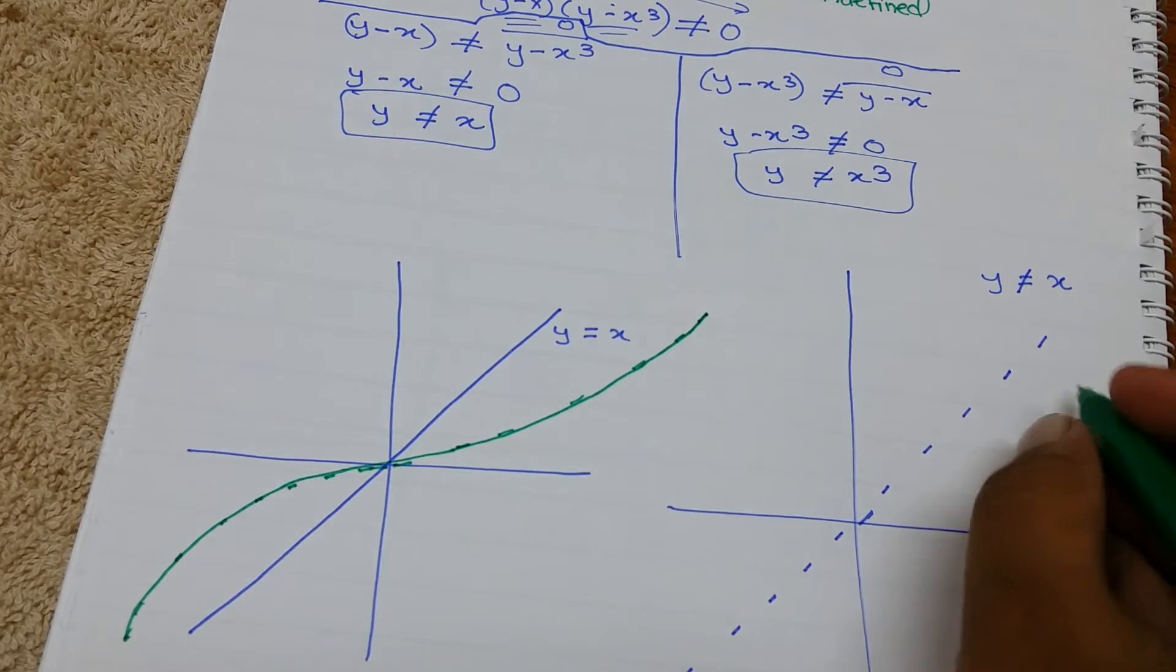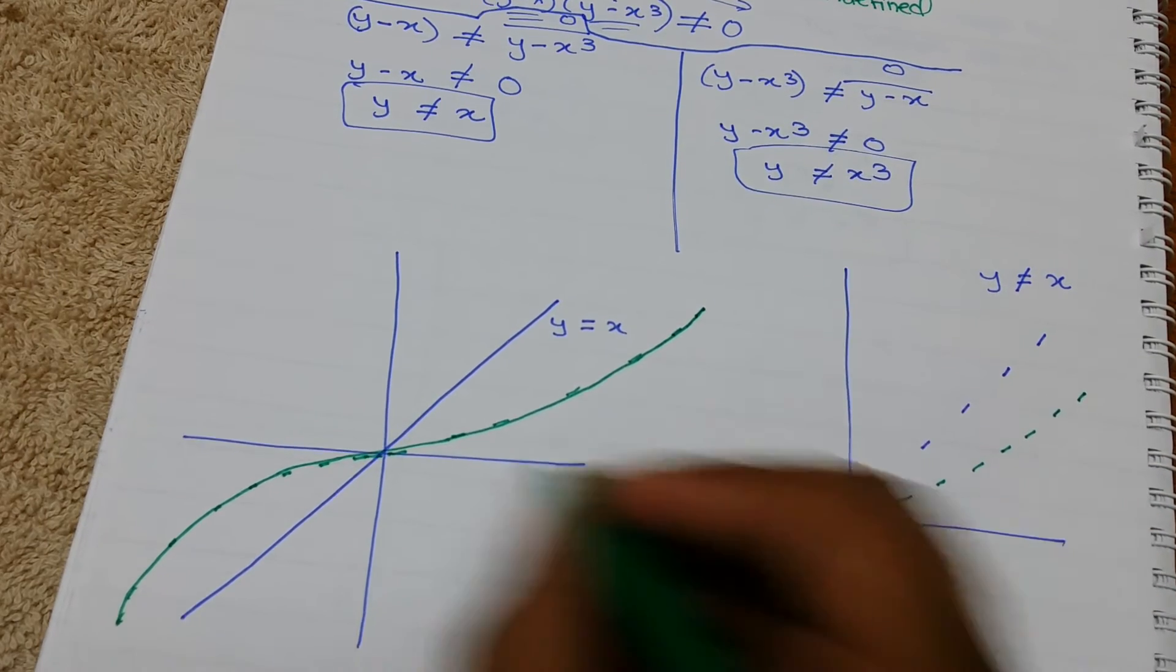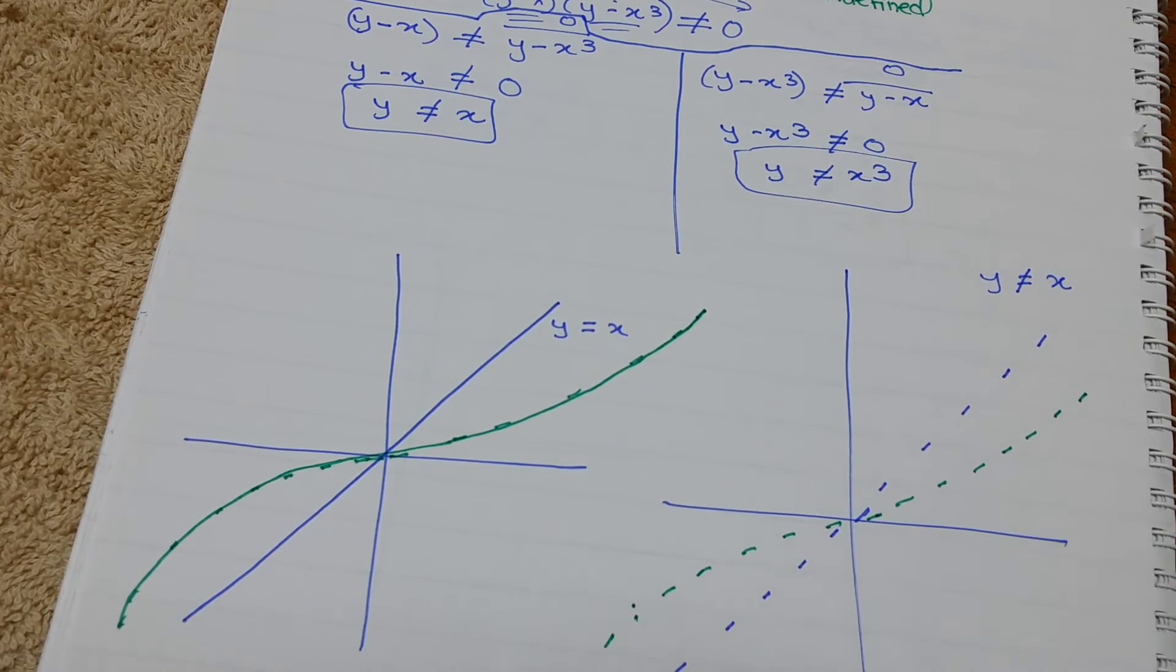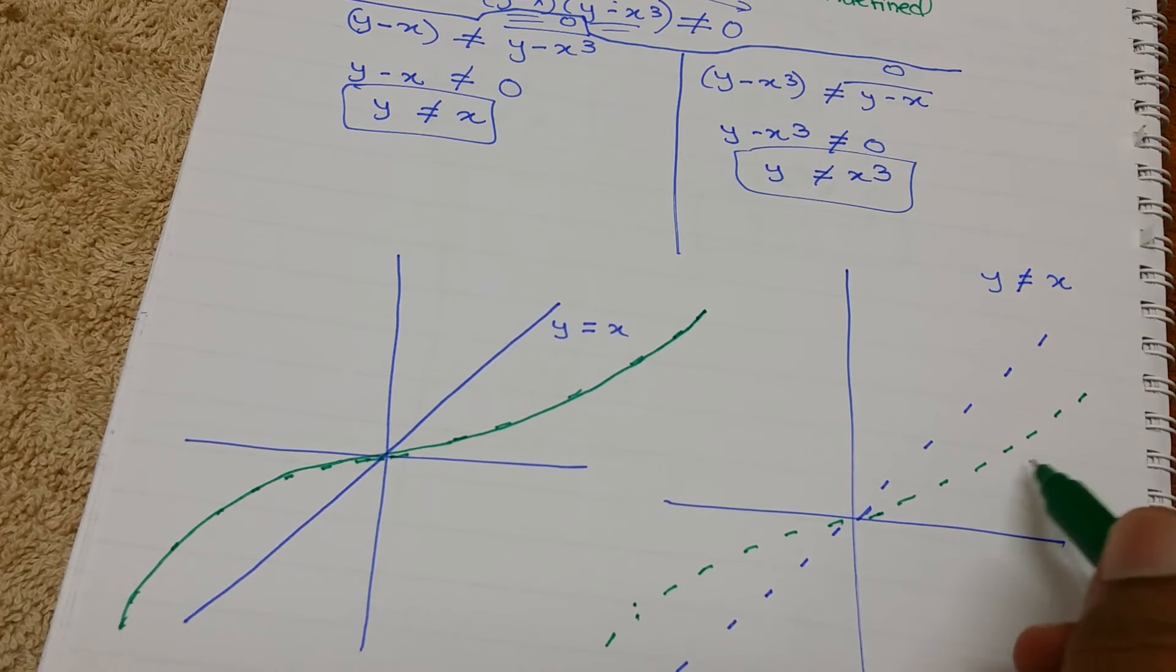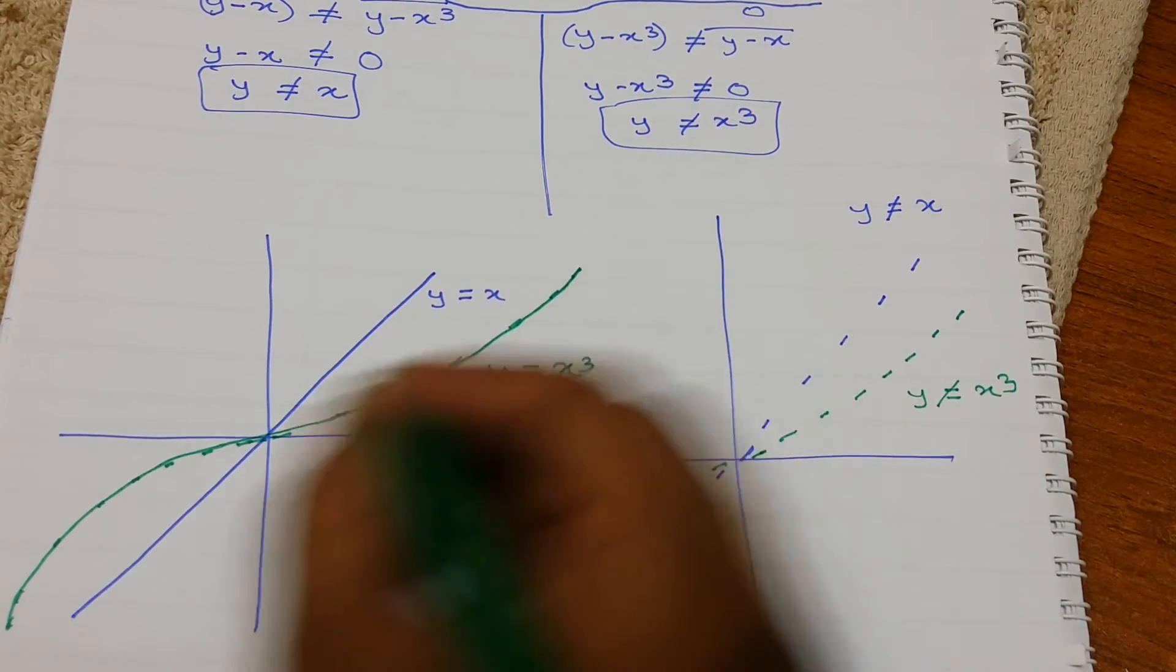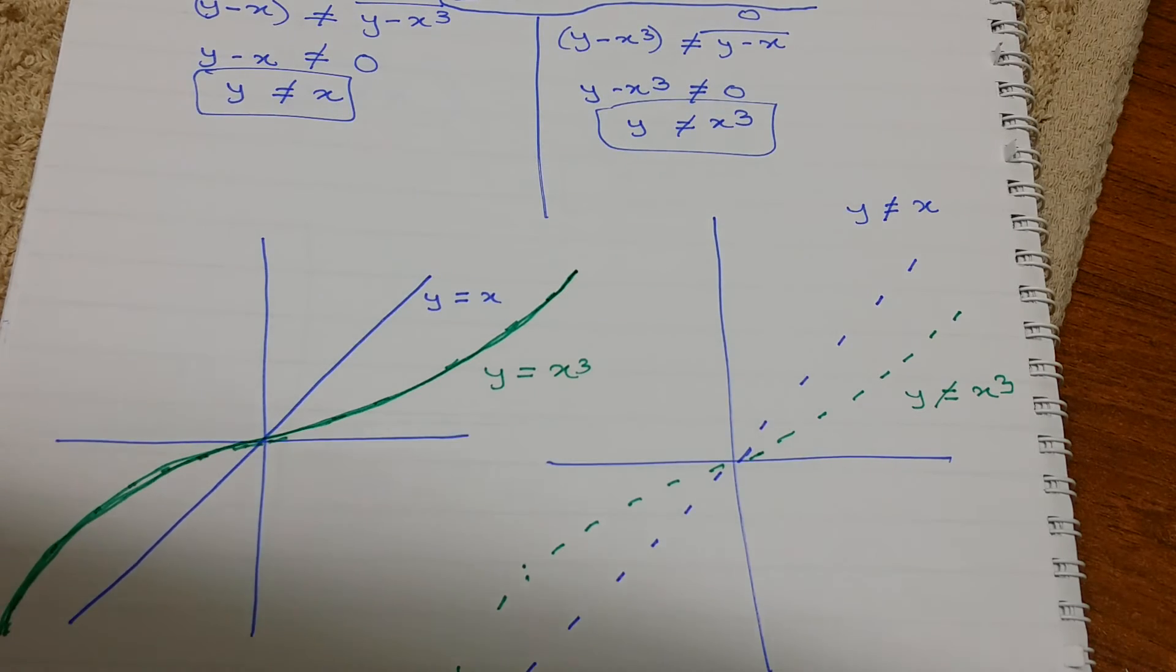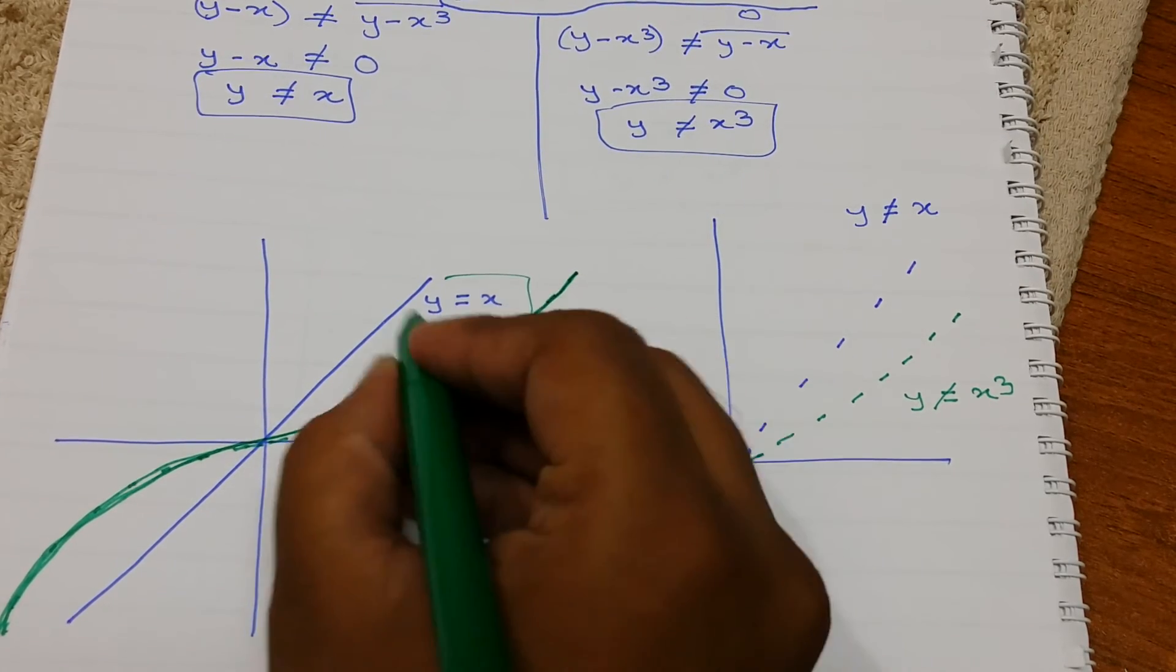So this would be our graph. This one right here is y ≠ x³ and this one right here is y = x³. This is not a dotted line, this is a solid line. Let me make it clear. If you don't believe me, you can check that if you plot the values—if you plot 0, 1, 2, 3 in this equation—we'll get the ordered pairs like (0,0), (1,1), (2,2).